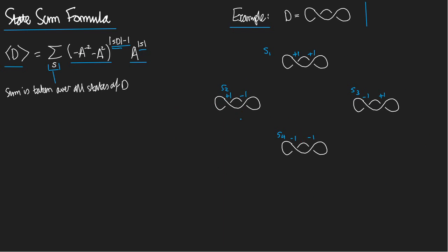|s1| equals two. |s2| equals plus one minus one, which is zero. |s3| is also zero. |s4| is minus two. Now let's do the smoothings. For s1 I take the positive smoothing of both crossings. For s2 I take the negative smoothing of the first crossing and the positive smoothing of the second.